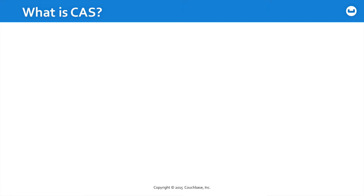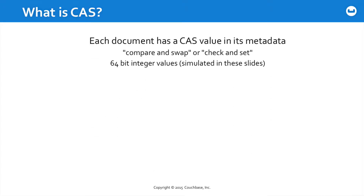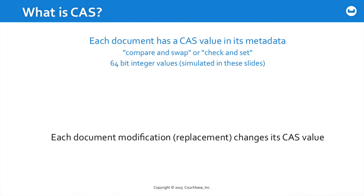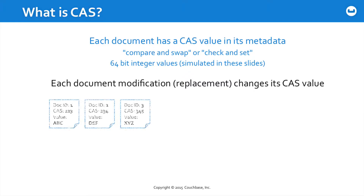We've been talking throughout this entire course about CAS, sometimes known as check and set or compare and swap. Each document managed by Couchbase has a CAS value in its metadata. These are 64-bit integer values, which we simulate in these slides with shorter numbers. Each document modification — every time you replace a document — its CAS value changes.